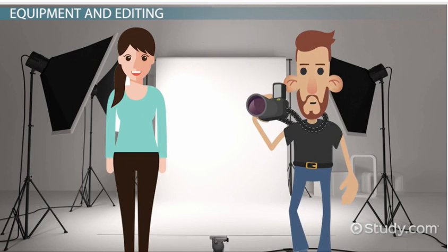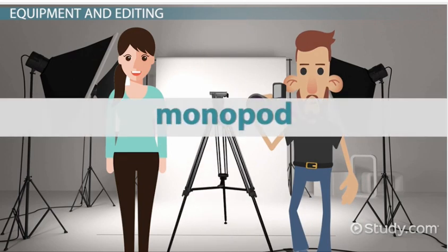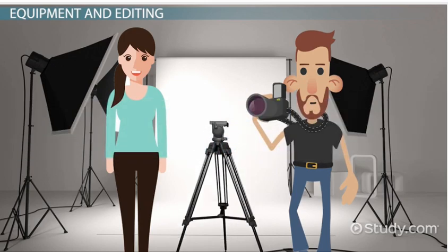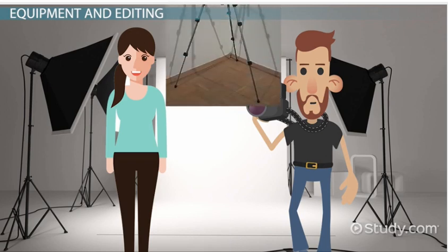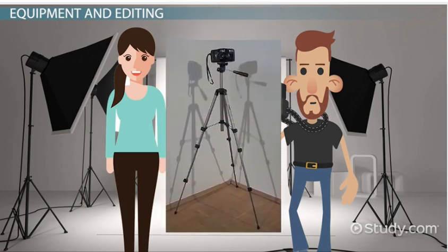One way to keep your photographs from looking blurry is to use a tripod or monopod. These can be attached to your camera to stabilize your shooting. Tripods can also aid when you want to be in your photograph — you can put your camera on your tripod, set your timer, and step into the frame.